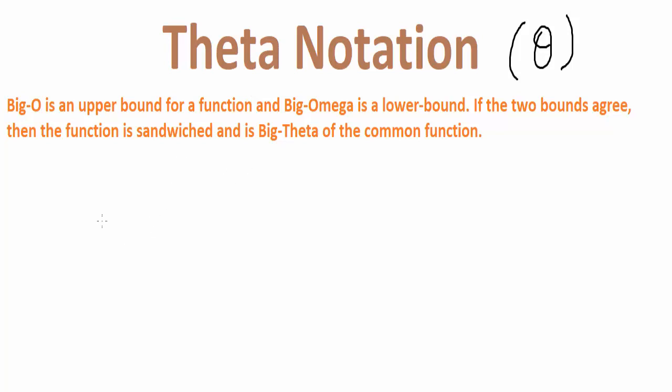Let me explain what it means. Suppose we have a function like f(n) and we take two functions c1 g(n) and c2 g(n) something like this. So f(n) must lie between these two, so that is the sandwich part. I will explain with the help of a graph.